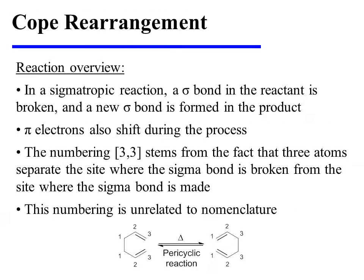In a sigmatropic reaction, a sigma-bond in the reactant is broken, and a new sigma-bond is formed in the product. Pi electrons also shift during the process. The numbering 3,3 stems from the fact that three atoms separate the site where the sigma-bond is broken from the site where the sigma-bond is made.